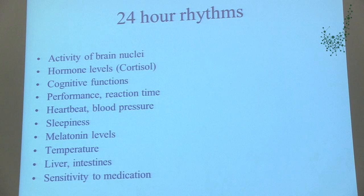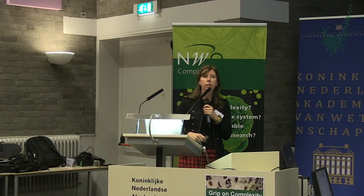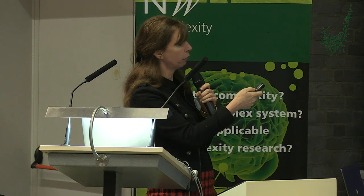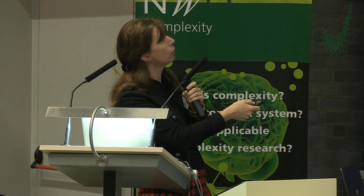Humans have a large number of 24-hour rhythms in their bodies. For instance, we show 24-hour rhythms in the activity of brain nuclei. We also show 24-hour rhythms in our hormone levels. If you measure cortisol levels in our blood carefully, you can see that cortisol levels already rise before we wake up in the morning, to prepare us for the day, because cortisol is required for activity. This is an example of how these changes help prepare us for what is about to come.